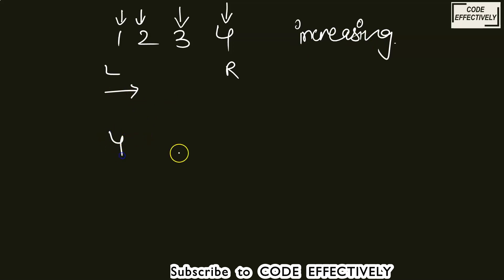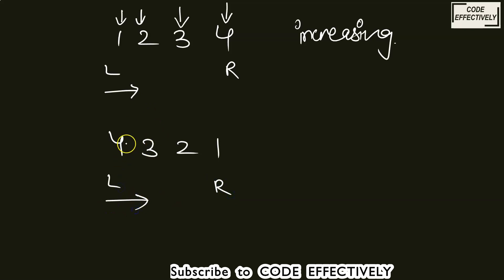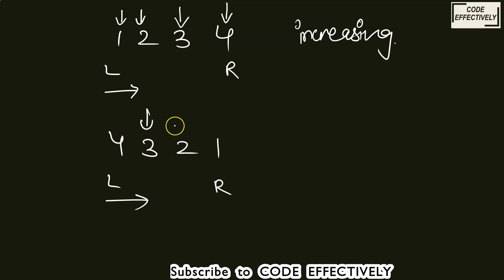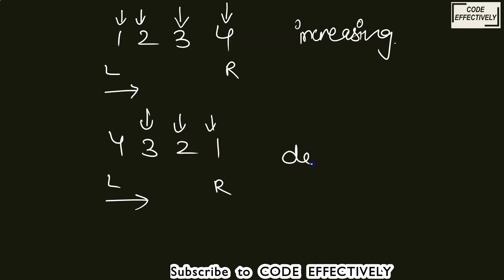In the same scenario, if the number were 4, 3, 2, 1 — moving from left to right, every number to the left is greater than the number to its right. 4 is greater than 3, 3 is greater than 2, and 2 is greater than 1. So here all the numbers are in decreasing order.